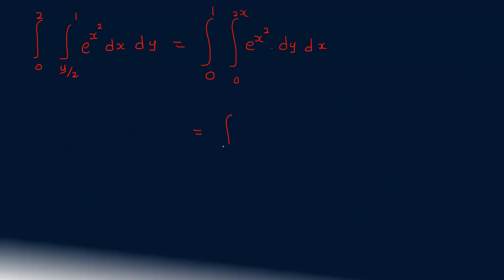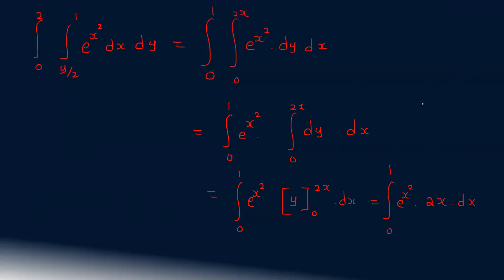That is equal to integral from 0 to 1 of e raised to x squared, times the integral from 0 to 2x of dy, dx. That equals integral from 0 to 1 of e raised to x squared times [y] from 0 to 2x, dx, which gives 2x dx. Using the substitution t equals x squared, dt equals 2x dx.